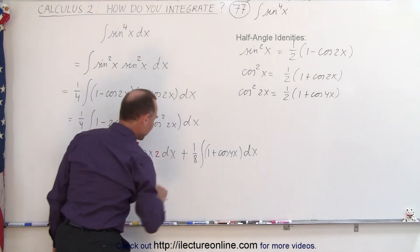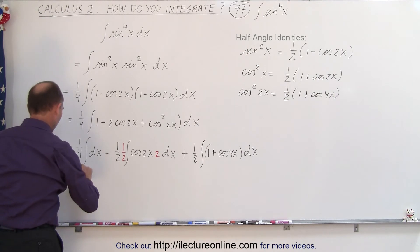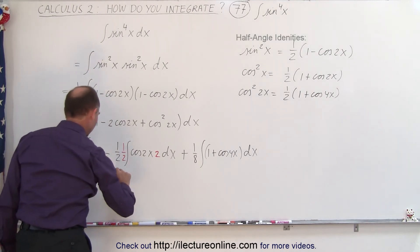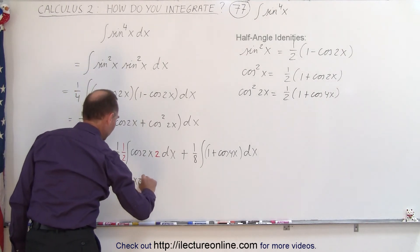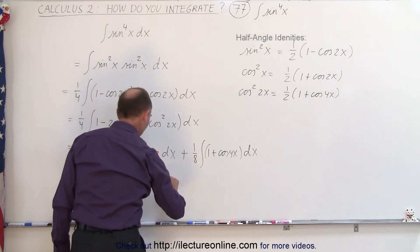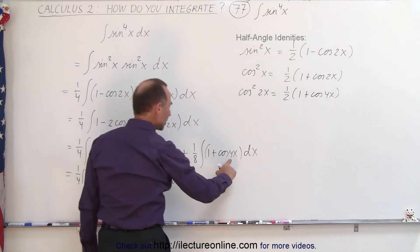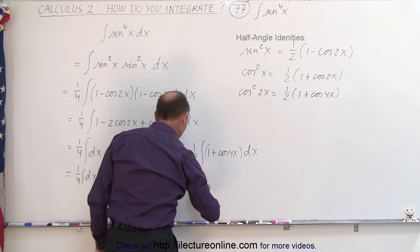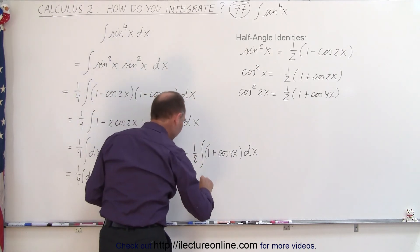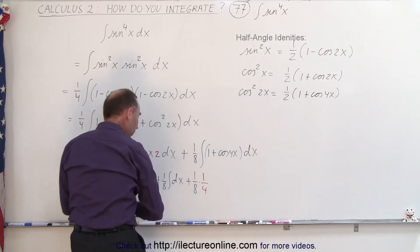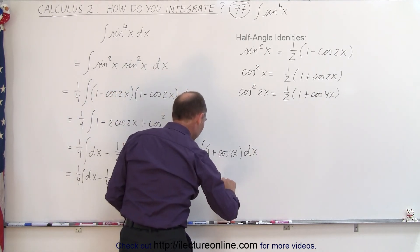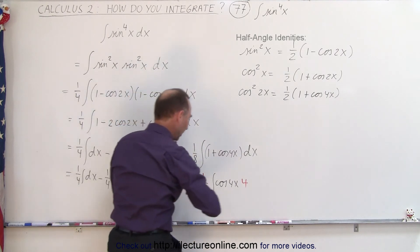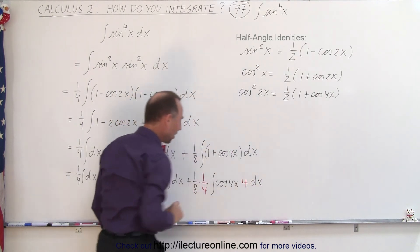Now we're going to write this as separate integrals: 1 quarter times the integral of dx, minus 1 quarter times the integral of cosine of 2x times 2 dx, plus 1 eighth times the integral of dx, plus 1 eighth times — because we need the proper differential, we multiply and divide by 1 fourth — times the integral of cosine of 4x times 4 dx. Now we have a proper differential.